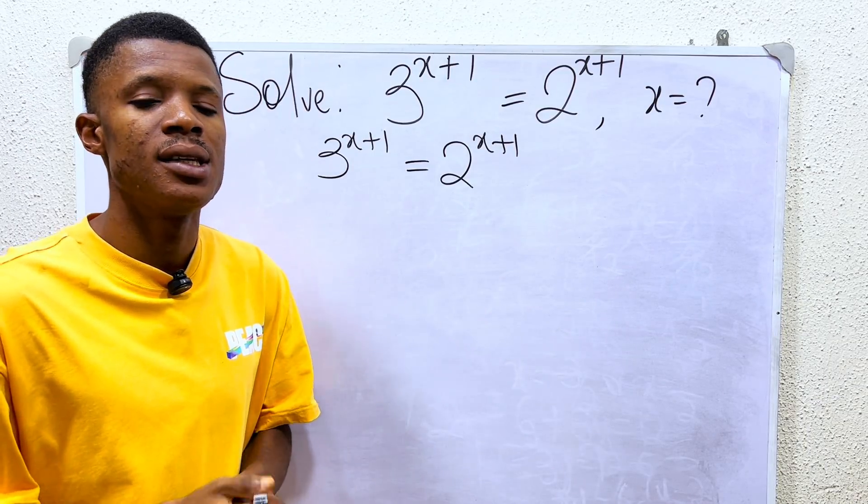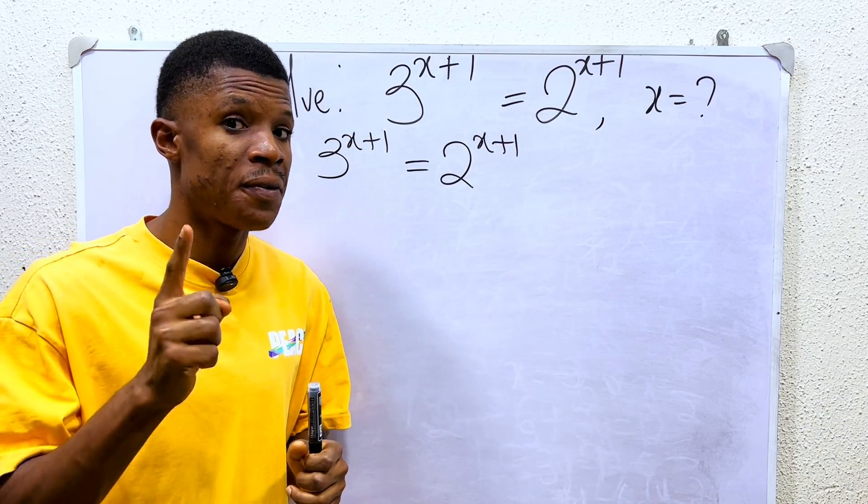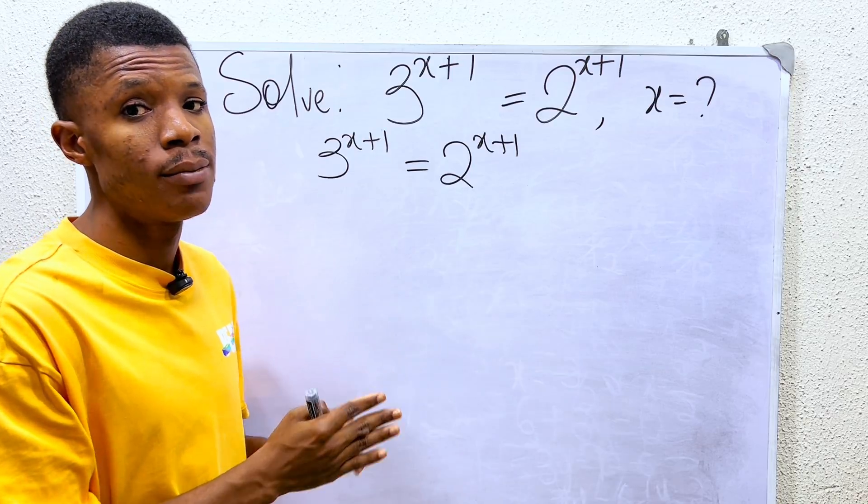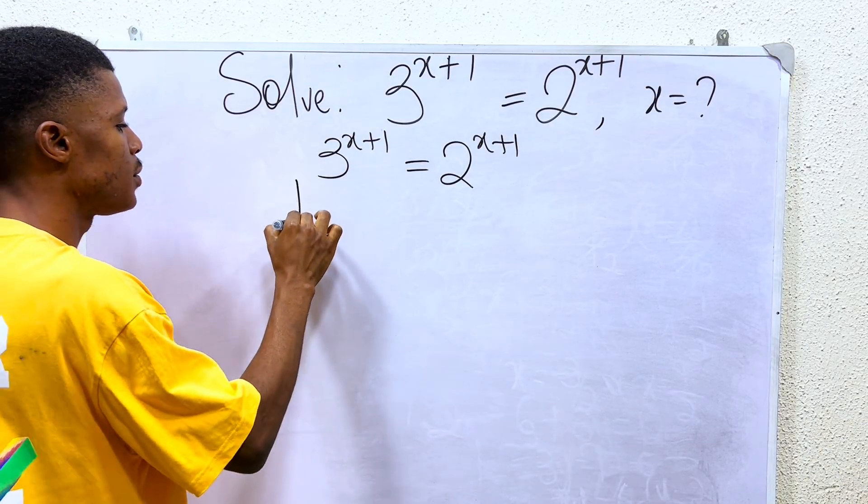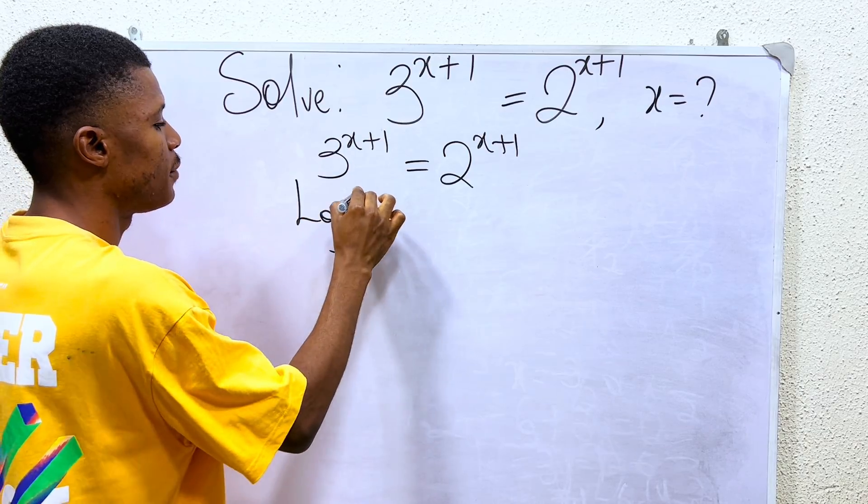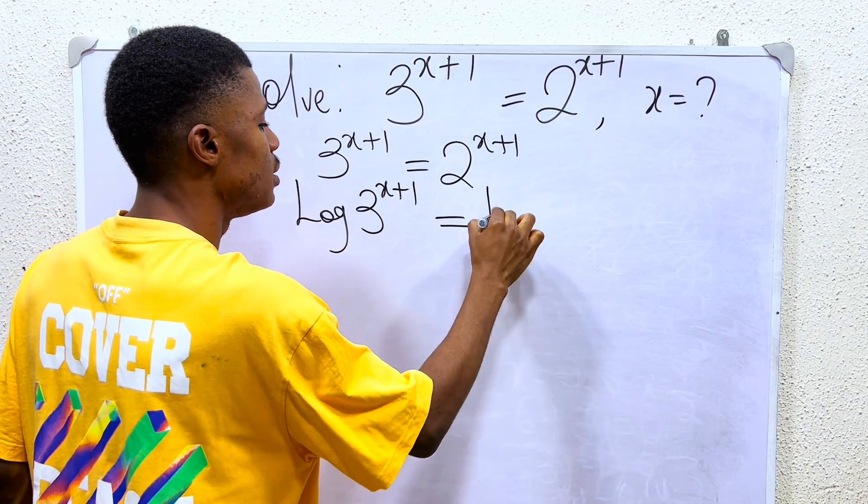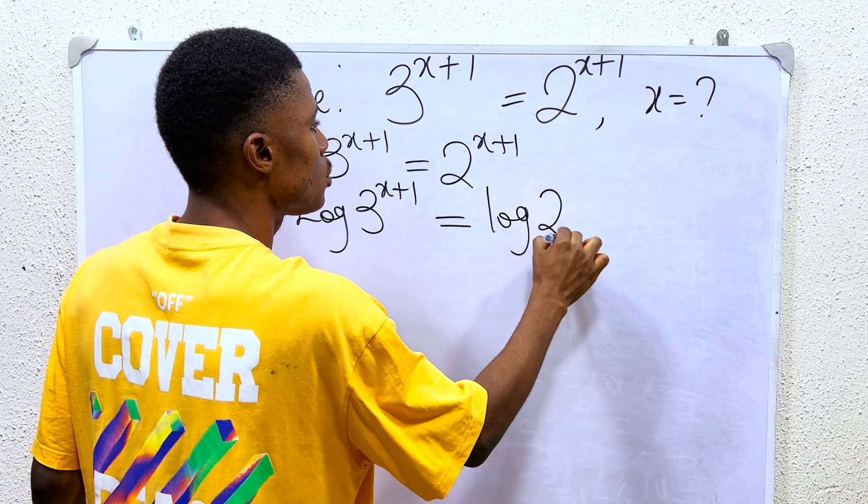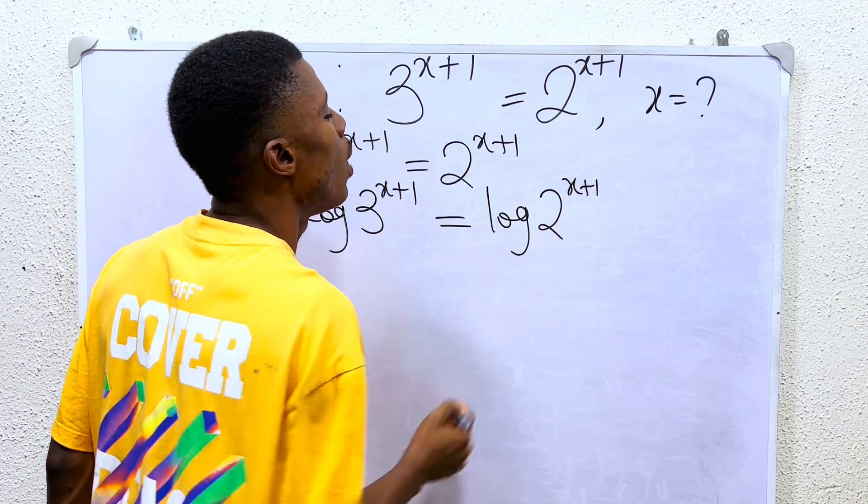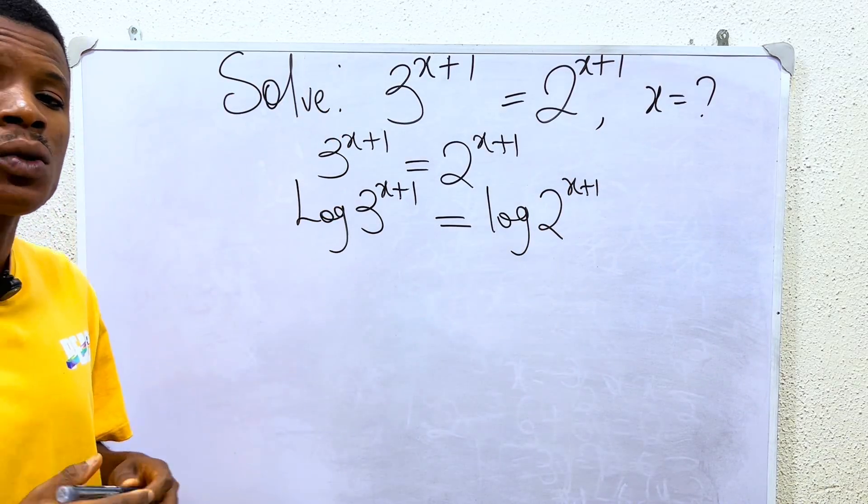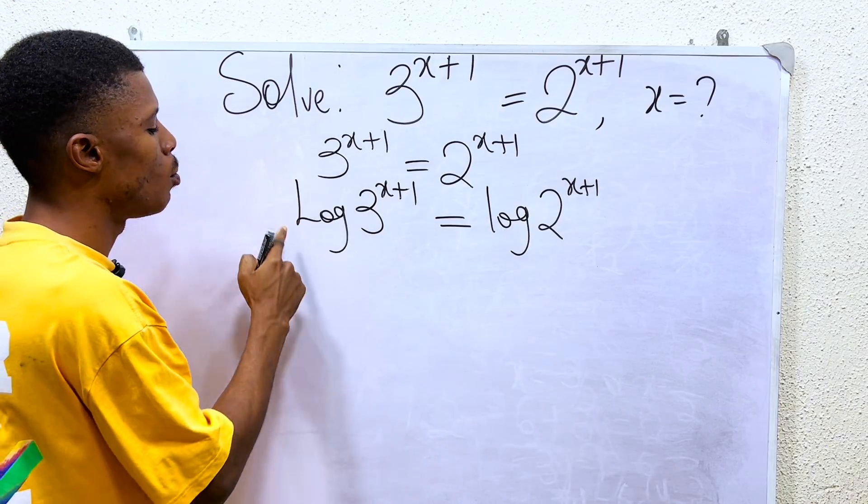So what you have to do to find this is to take the logarithm of both sides. If you take log 3^(x+1), that should give you the same as log 2^(x+1). The reason why we took the log is that in logarithm it allows us to multiply the power to the log.